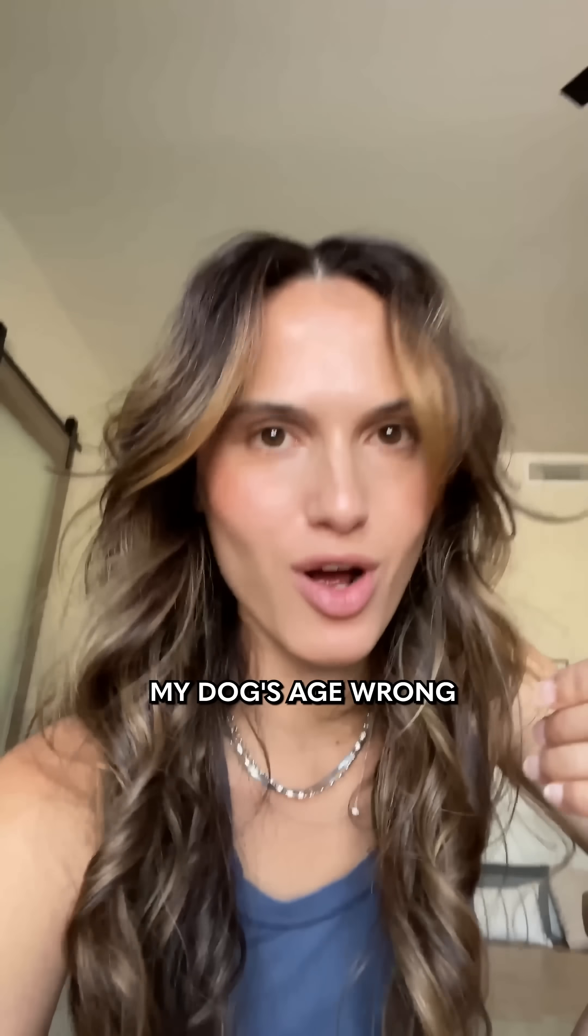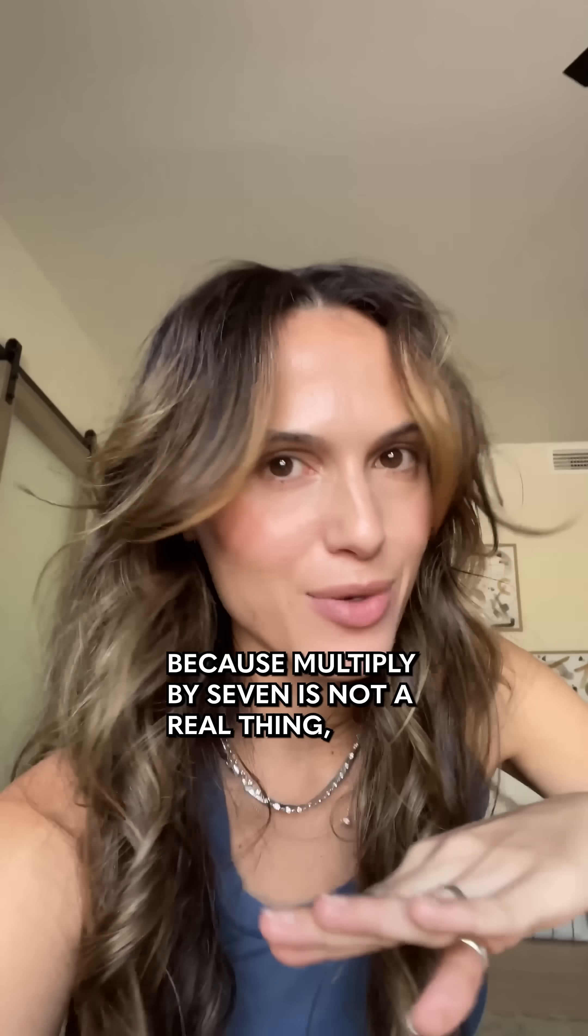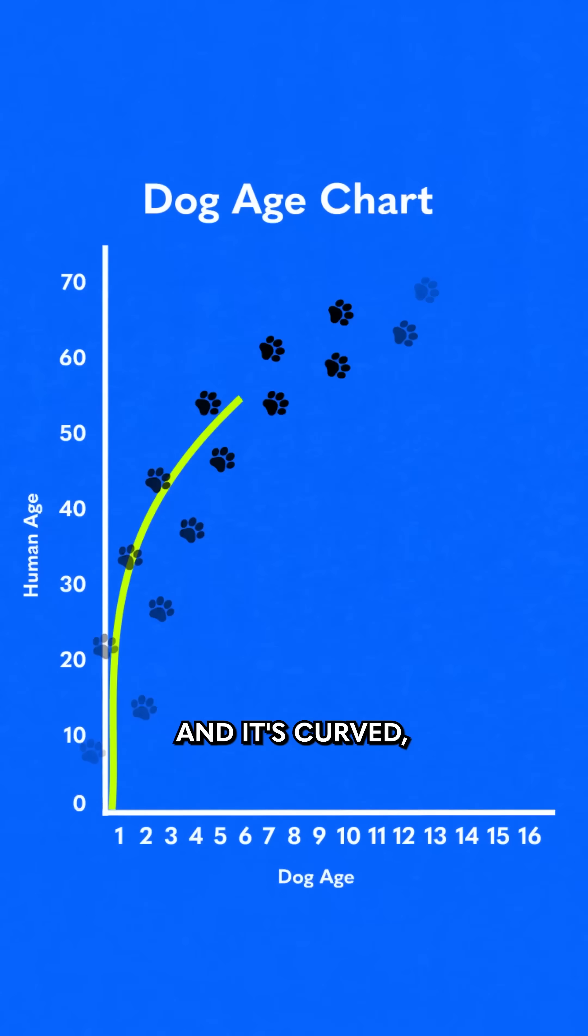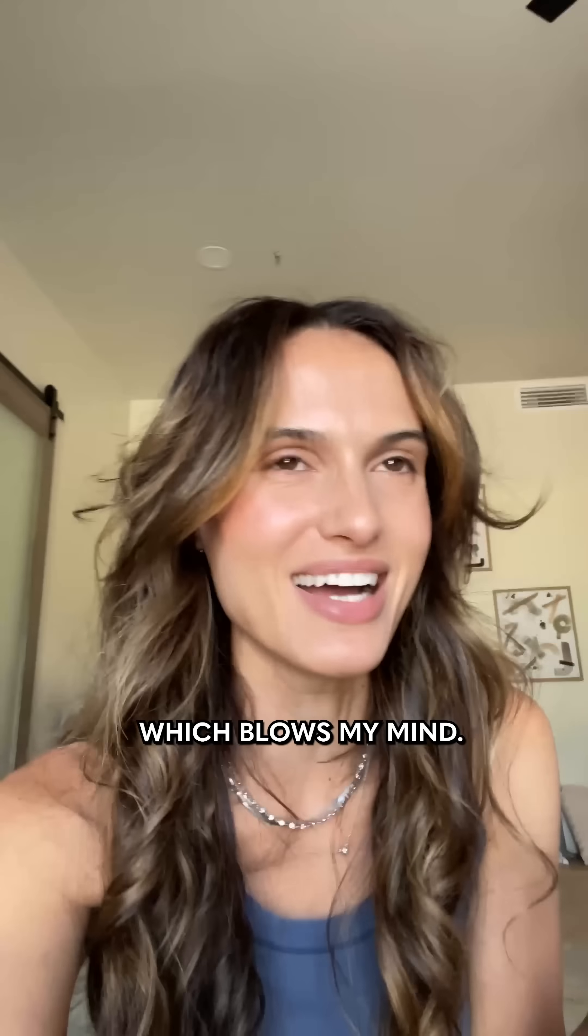Turns out I've been estimating my dog's age wrong, because multiply by seven is not a real thing. Instead, geneticists at UC San Diego created this chart, and it's curved, which blows my mind.